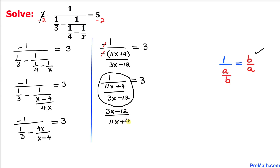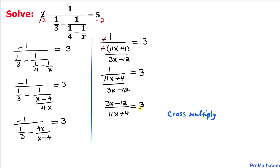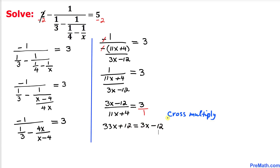We make 3 a fraction by putting 1 underneath and then cross multiply, giving us 33x plus 12 equals 3x minus 12.